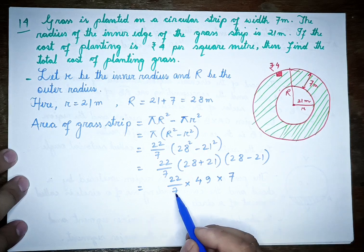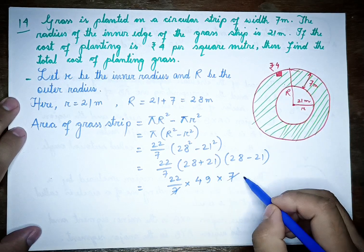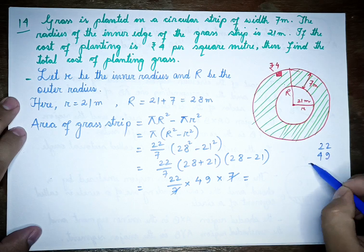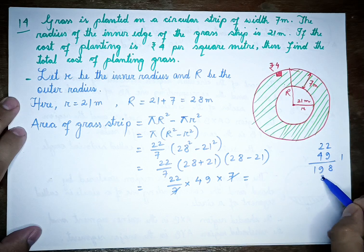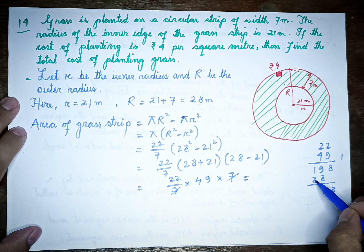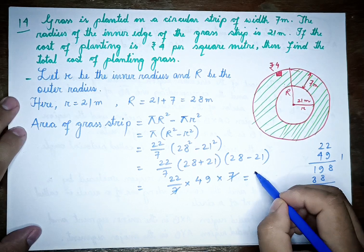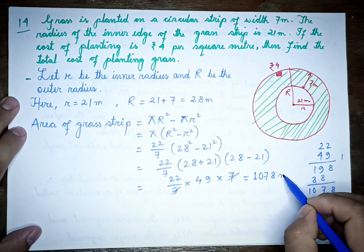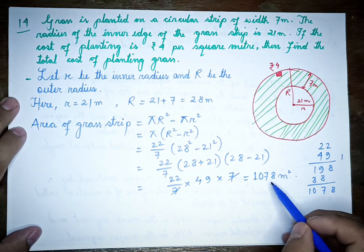Simplifying: 22 multiplied by 49 equals 1078. So the area of the grass stripe is 1078 square meters.